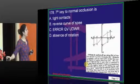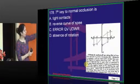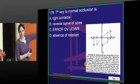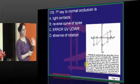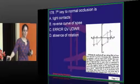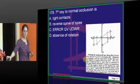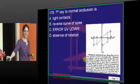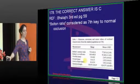The seventh key to normal occlusion relates to Bolton's tooth size ratio analysis. The answer is C, and we are confirming this is Bolton's analysis — specifically the tooth size ratio.